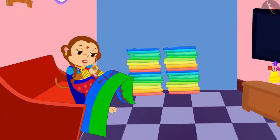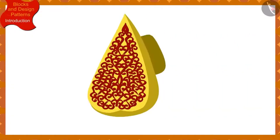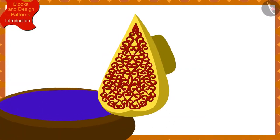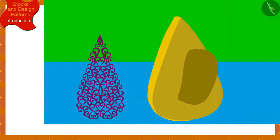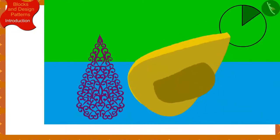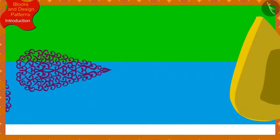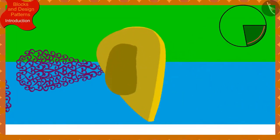Banno returned home and started designing a sari for Chanda. Banno has a block of this design. She first dipped her block in a box of color and made an impression on the sari. She then made a second impression by dipping the block in the box of color again, this time rotating the block a quarter in the clockwise direction. Banno continued making the design by every time rotating it a quarter from the previous impression.